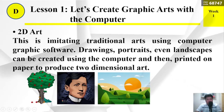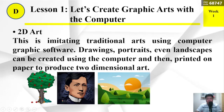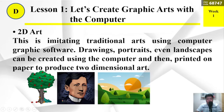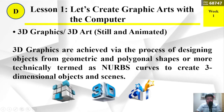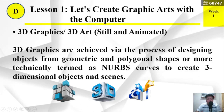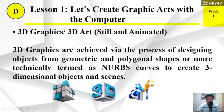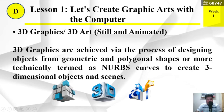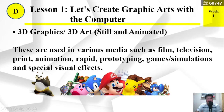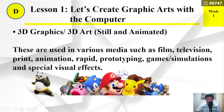2D art is imitating traditional arts using computer graphics software. Drawings, portraits, even landscapes can be created using the computer and then printed on paper to produce two-dimensional art. 3D graphics and 3D art — still and animated — are achieved via the process of designing objects from geometric and polygonal shapes, or more technically termed as NURBS curves, to create three-dimensional objects and scenes. These are used in various media such as film, television, print, animation, rapid prototyping, games, simulations, and special visual effects.